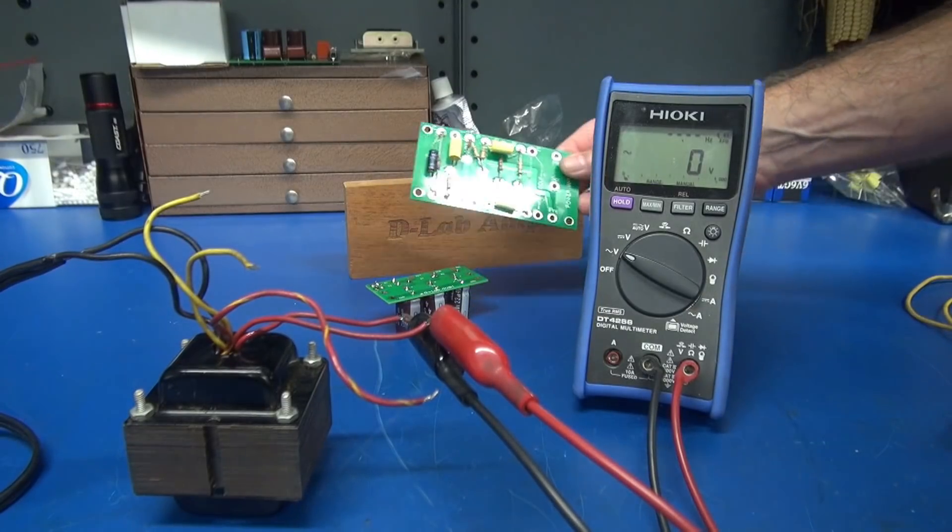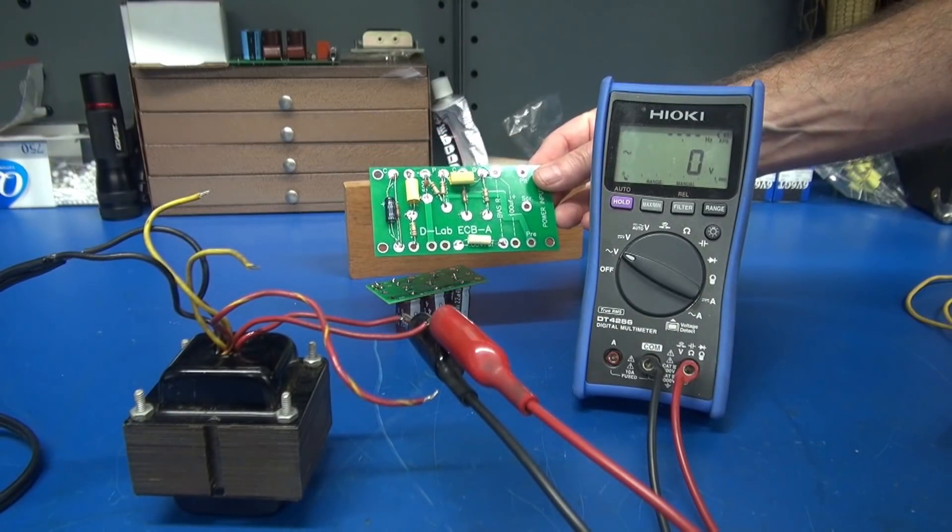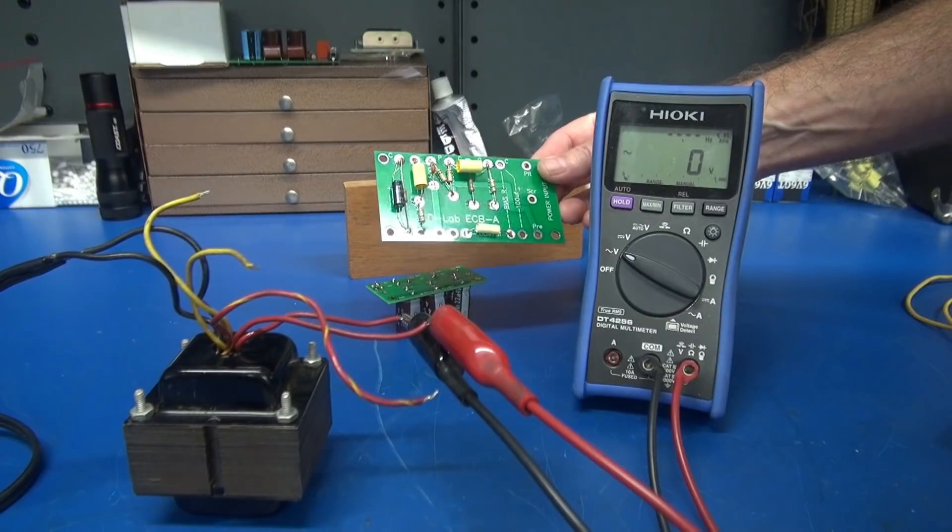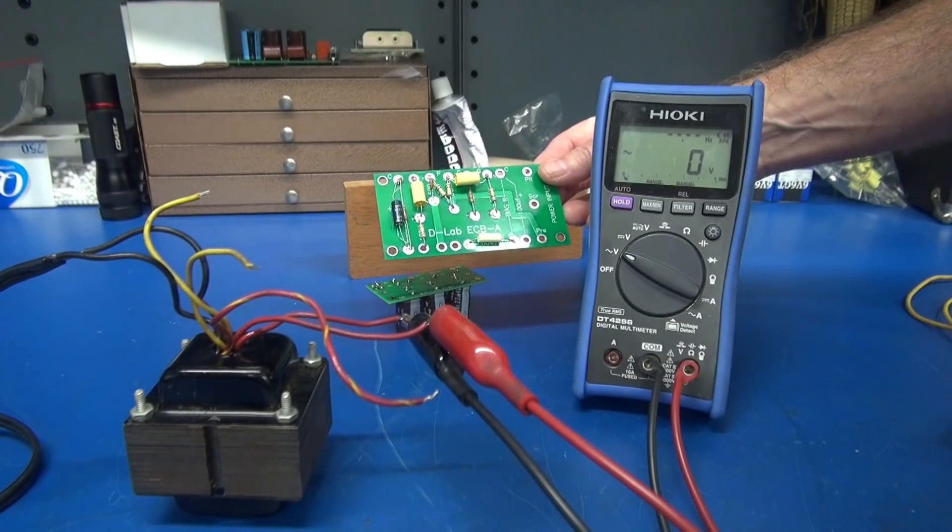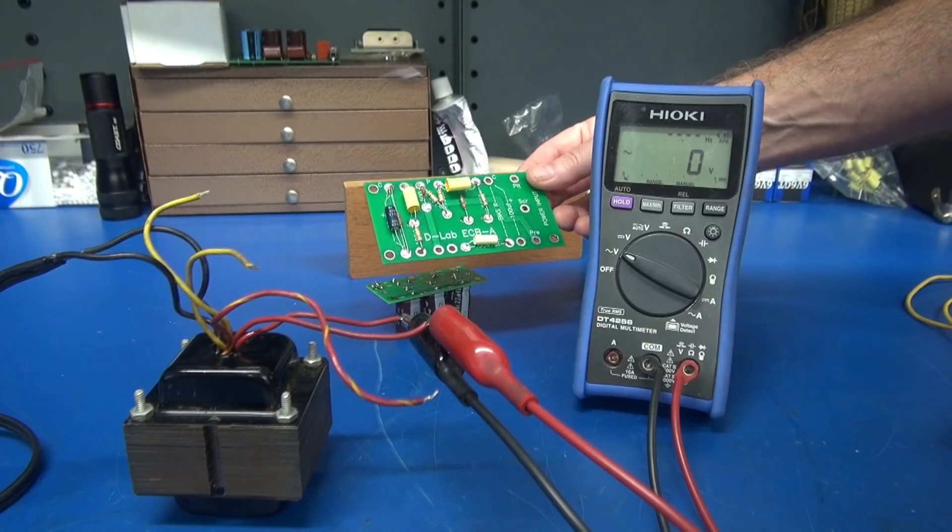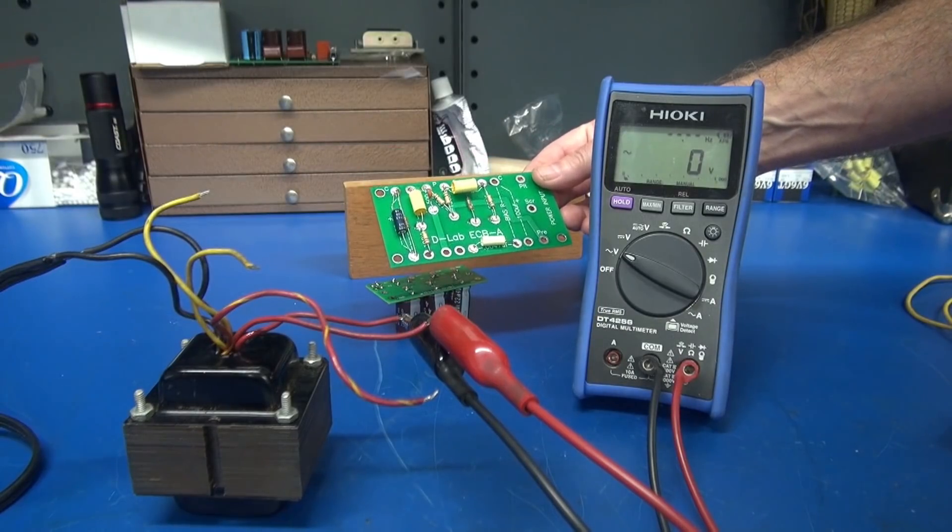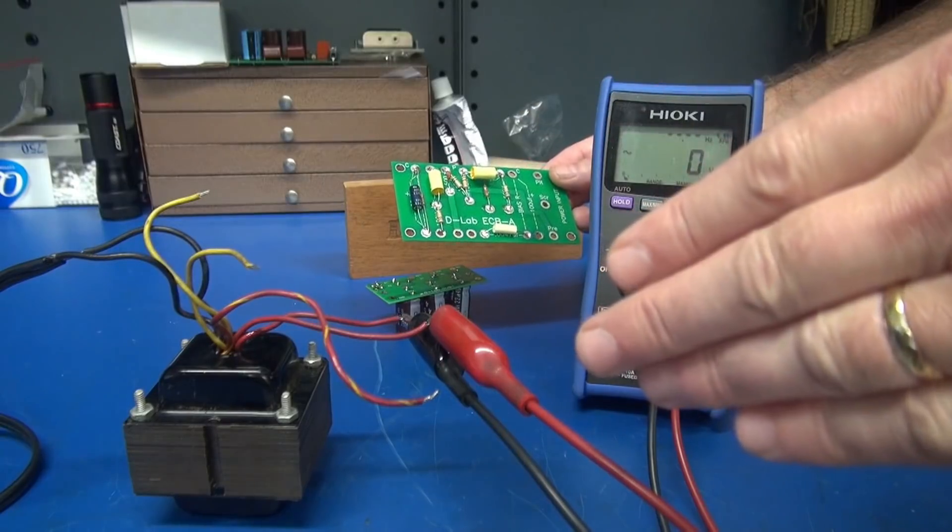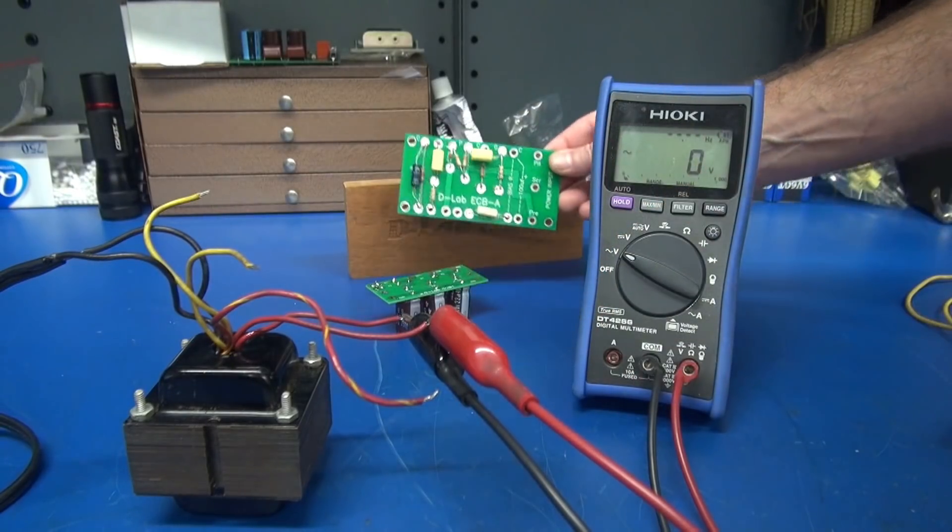So the heart of the amp will be the D-Lab ECBA board. And this little circuit board will actually work with any Class A design because this simply supports the preamplifier section and the power feeds to your output tube. Setting bias and selecting the proper power transformer is a different matter.